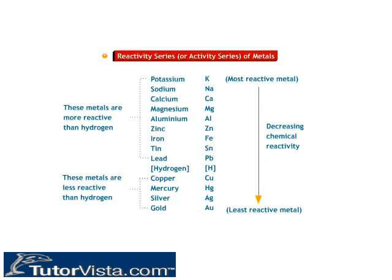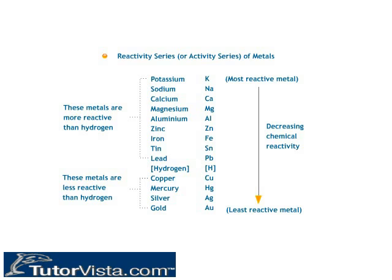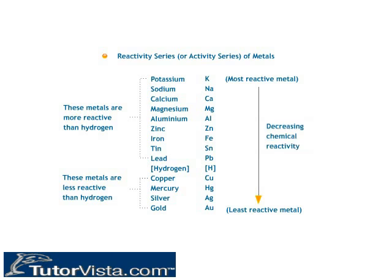The reactivity series is a list of metals arranged in the order of their decreasing reactivities. Hydrogen has been included in the table, although it is a non-metal, because hydrogen, like metals, gives off an electron while forming bonds. Metals which are more reactive than hydrogen can displace hydrogen from water or dilute acids and liberate hydrogen gas. Metals which are less reactive than hydrogen do not replace hydrogen in a reaction with water or dilute acids.